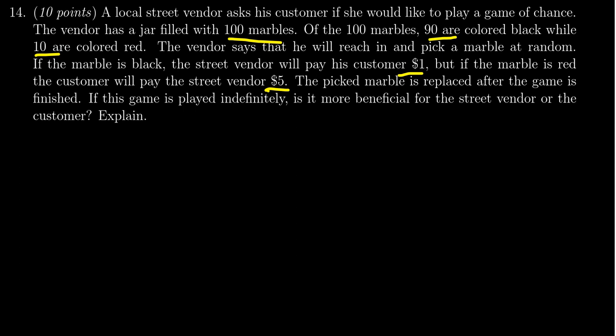So we have to first calculate what is the expected value of this random experiment, and then based upon the number, we'll see who it is better for. So if X is our random variable, then we want to look for the expected value of this random variable.